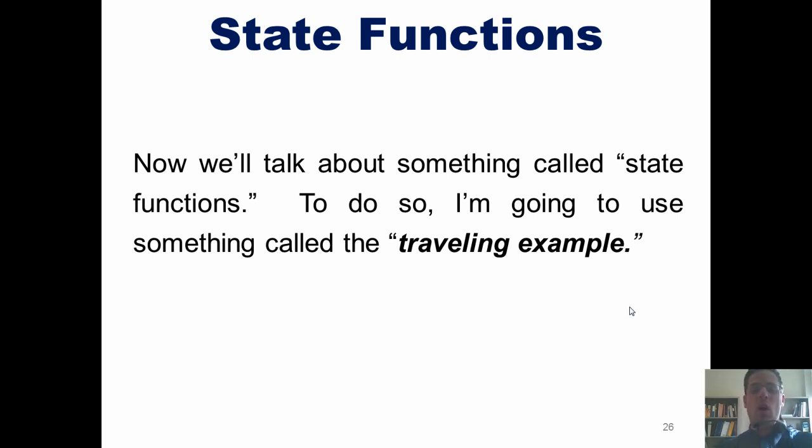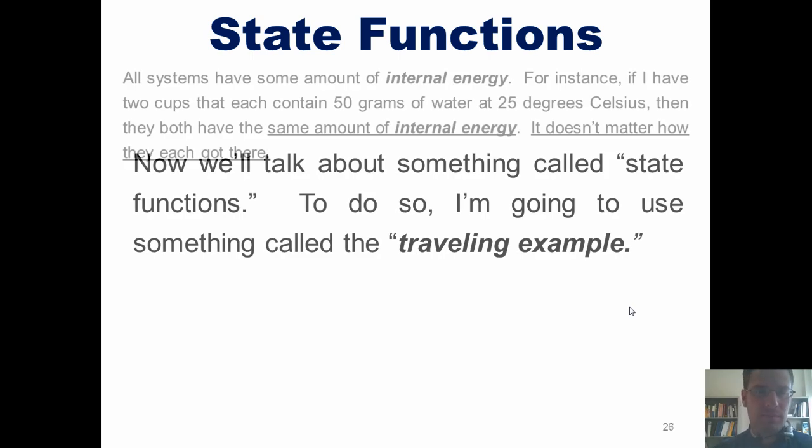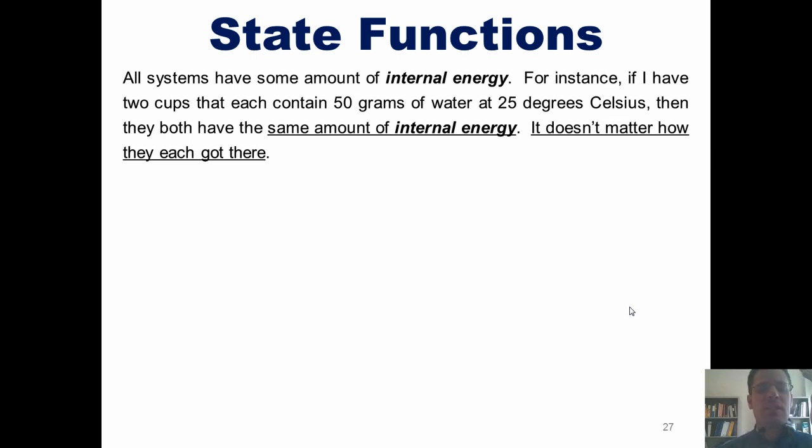Now, as it turns out, there are certain thermodynamic properties that are also called state functions. State functions, as I'll reiterate momentarily, are limited completely to the current physical state of the substance in question and do not depend in any way upon how the substance got to that state. So all systems, as it turns out, have some amount of internal energy, and that energy will be the same for two different systems that have the same amount of substance, the same type of substance, and the same temperature. For instance, if I have two cups that each contain 50 grams of water at 25 degrees Celsius, then they both have the same exact amount of internal energy. It doesn't matter how they each got there.